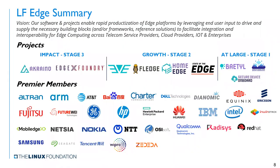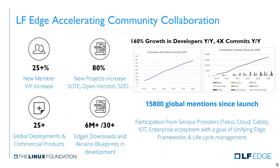The LF Edge summary — you can find the logos from your company. There are many premium members, and many of them are very active in Akraino, like 75% of them. Akraino blueprints has more than 30 blueprints in development, and there were 15,800 global mentions since the launch of LF Edge. There are more than 25 global deployments and commercial products available today.